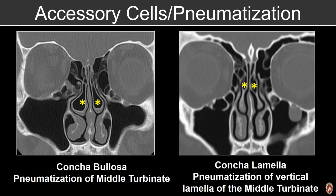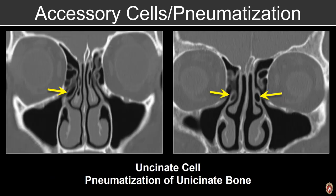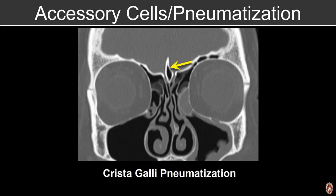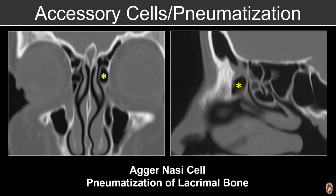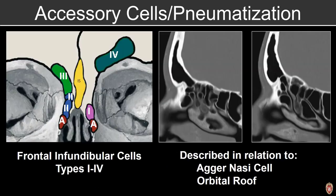Here we have concha lamellosa, which is pneumatization of the vertical lamella of the middle turbinates. We can also see pneumatization of the uncinate bone, pneumatization of the crista galli, pneumatization of the lacrimal bone or the agger nasi cell — the most anterior pneumatized air cell seen on routine sinus examinations. It's important to comment on these, particularly if they are causing compromise of the frontal sinus drainage pathway. Additional air cells above or adjacent to the agger nasi cell are referred to as frontal infundibular cells, termed type 1 through type 4.